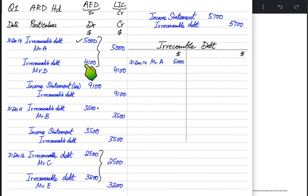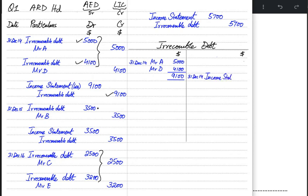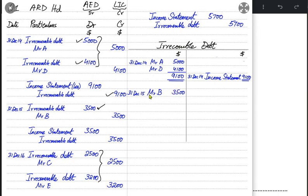Another customer Mr. D also turned bad in 2014, so we debit the irrecoverable debt account and credit Mr. D's account. At year-end, with two customers who failed to pay, we add both amounts — totalling 9100 — and transfer the entire amount to the income statement. There is no balance bd or cd in an irrecoverable debt account; the entire amount is transferred to the income statement. In 2015, only one customer turned bad for 3500, so the irrecoverable debt account is debited with reference to Mr. B.